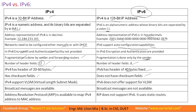IPv4 supports broadcast messages, but IPv6 does not support broadcast messages. IPv4 uses Address Resolution Protocol (ARP) to map IPv4 addresses to MAC addresses, but ARP does not support IPv6. IPv4 uses the RIP routing protocol, while IPv6 uses a different version of the RIP protocol.